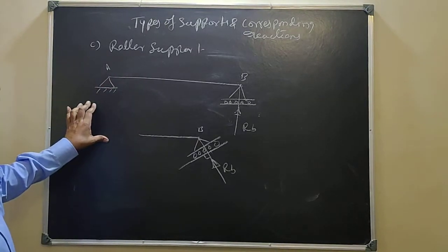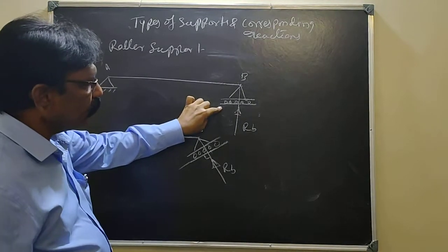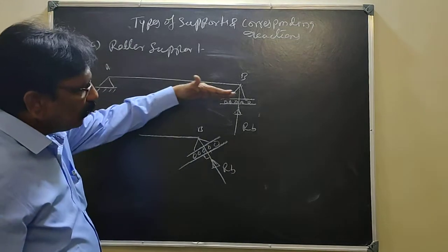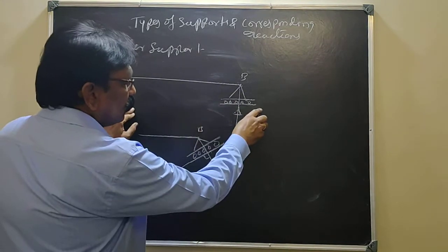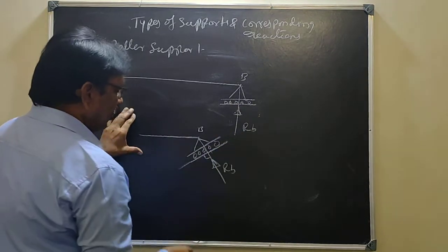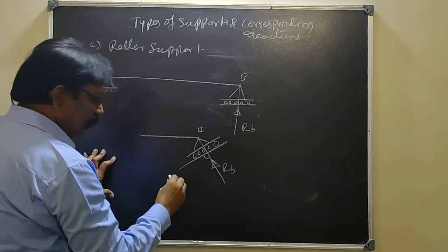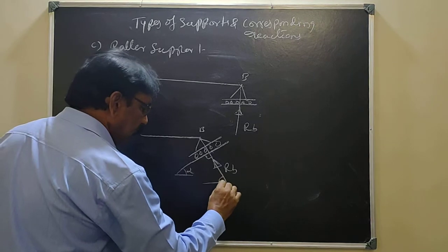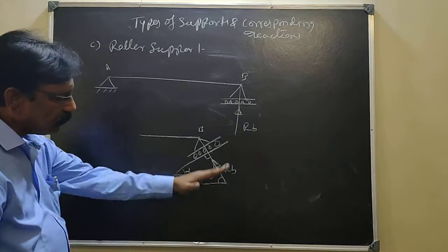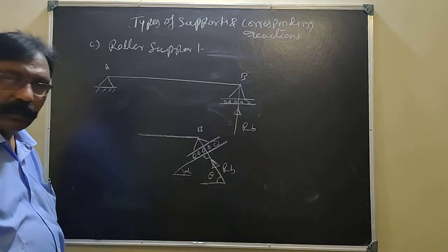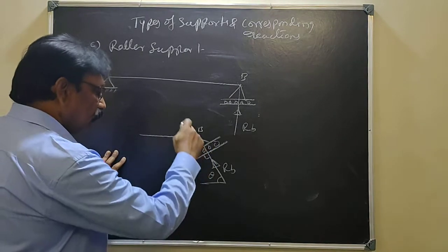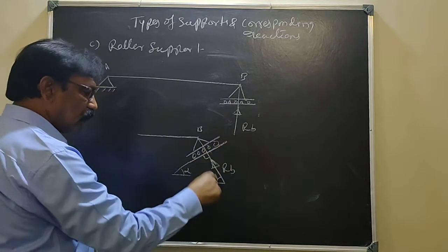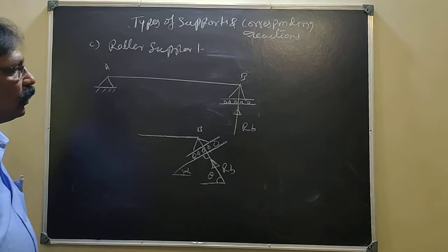Another type of support is the roller support. At a roller support, there is the possibility of horizontal movement, so only one reaction will develop. This reaction is always normal to the surface of the roller. If the roller surface is horizontal, the reaction RB is vertical — perpendicular to that surface. If the rollers are inclined by a certain angle alpha, then the reaction is still normal to that inclined surface. The angle θ can be calculated as 180 minus alpha minus 90. So the support reaction is always normal to the roller surface — vertical when the surface is horizontal, and inclined when the surface is inclined. Only one reaction develops at a roller support.